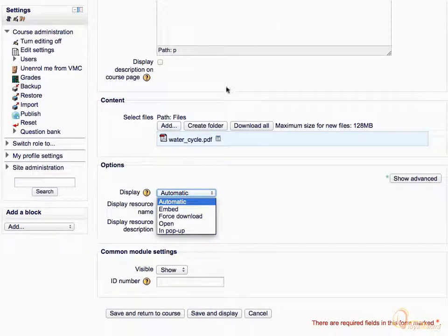In the previous lesson while adding the file, we have changed the display option for the file to embed. Let's see how different display options affect the file view.